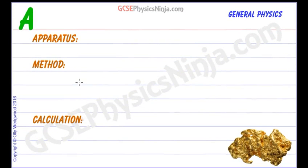So first of all, apparatus. We need to have a balance, a digital balance would be just right. And we would also need a displacement can.